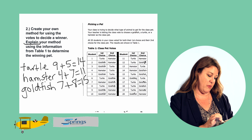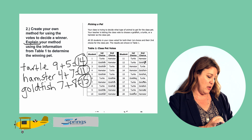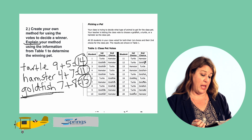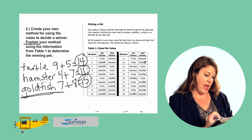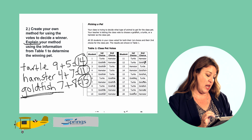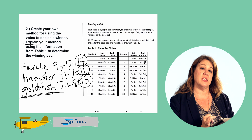So the turtle received 14 total votes, the hamster received 11 total votes, and the goldfish received 15 total votes — so the goldfish is the winner. To explain how I got that answer: I added the total number of first choice votes to the total number of second choice votes for each pet, then compared each of those three grand totals. The goldfish won because 15 is more than 11 and more than 14. And that's all I need to solve question number two. Are you ready for the next one?